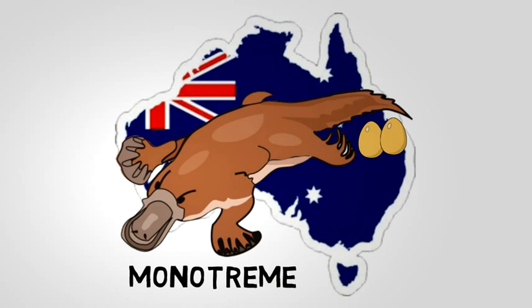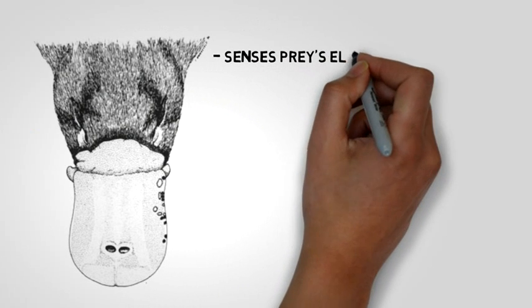Monotreme. Electro-receptors on bill sense prey's electrical current.